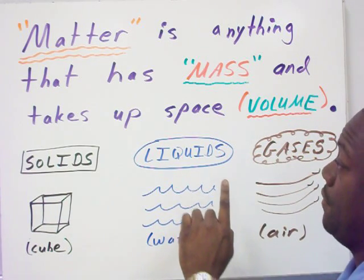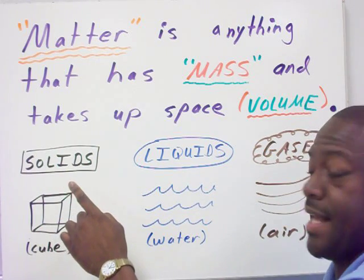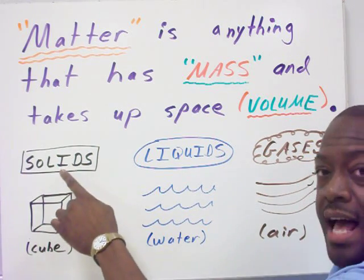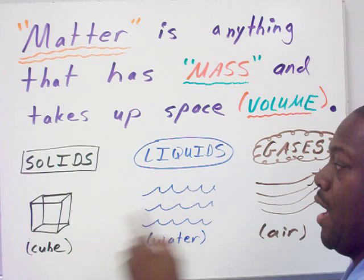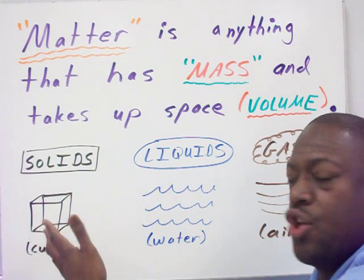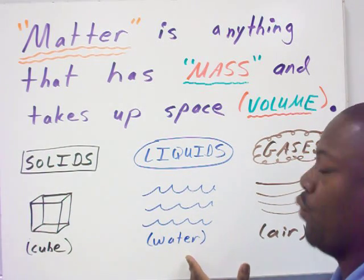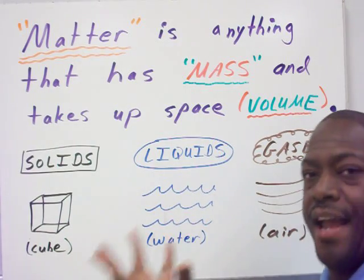There are four states of matter, but there are three that will be discussed today. We have solids, liquids, and gases. Something that is solid could be like a cube of ice. Your liquids could be a pump of water. Your gas could be like a pump of air.